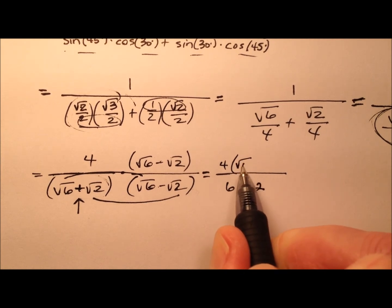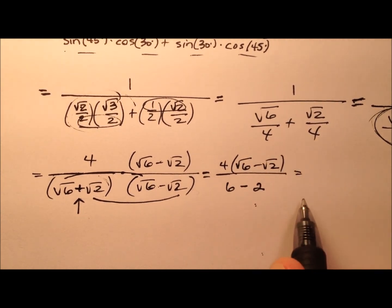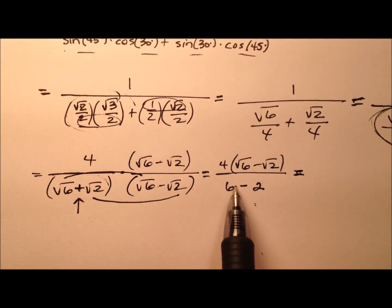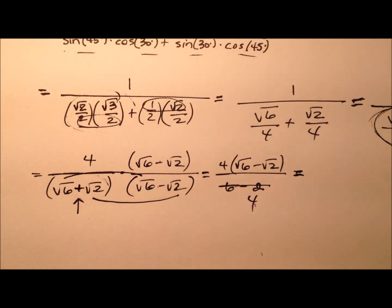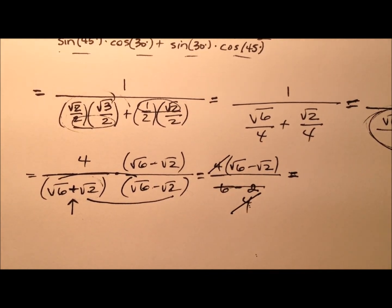We'll have 4 times that quantity right there. So 6 minus 2 is 4, and then these 4s will cancel.